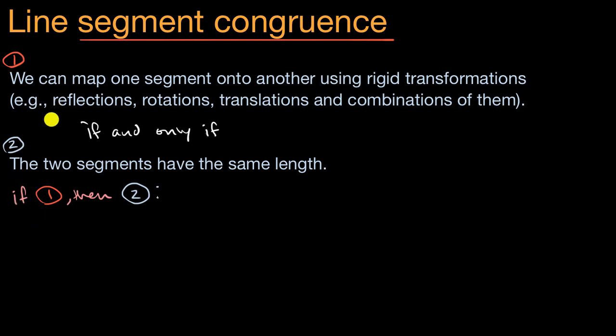And some proofs like this might be difficult because they feel so intuitive. But one way to prove this is to first say that by definition, rigid transformations preserve length. So, by definition, that's what makes them rigid. Rigid transformations preserve length.